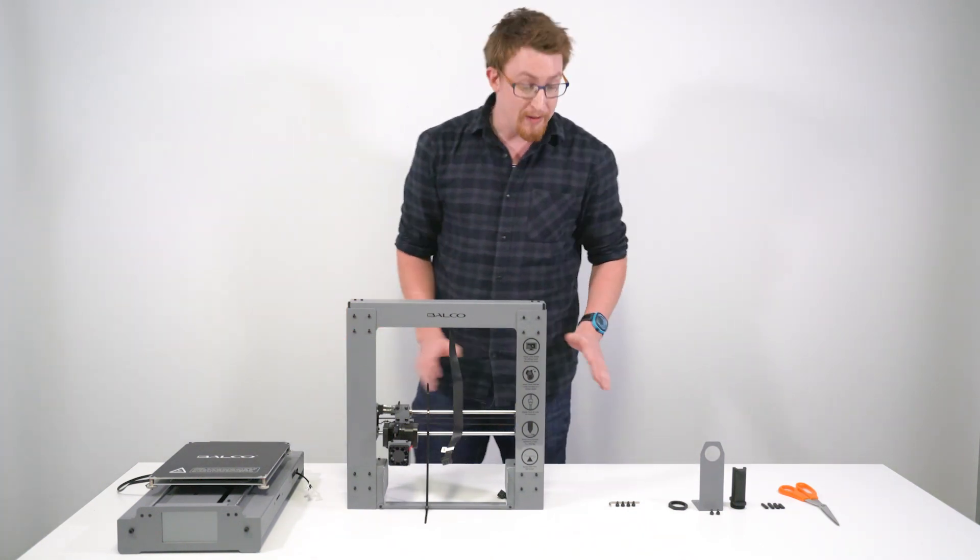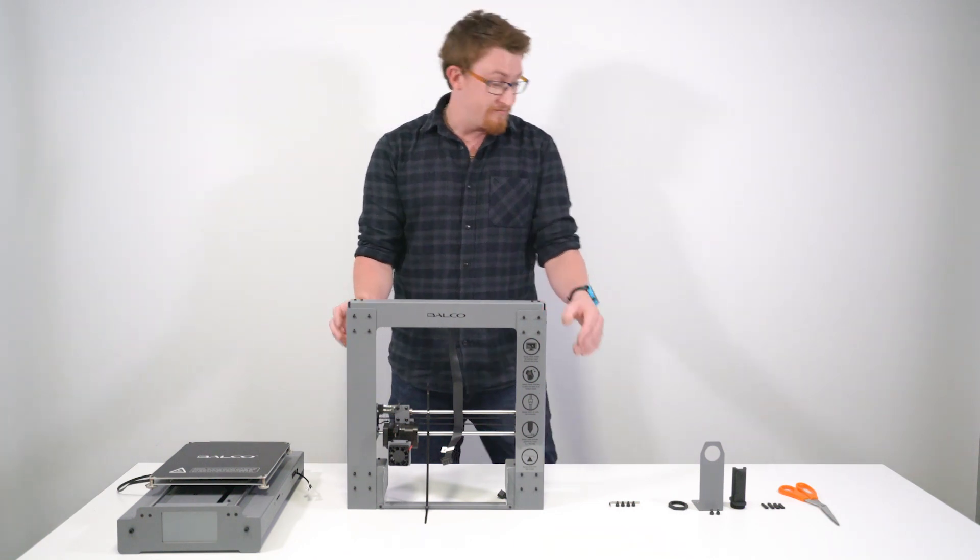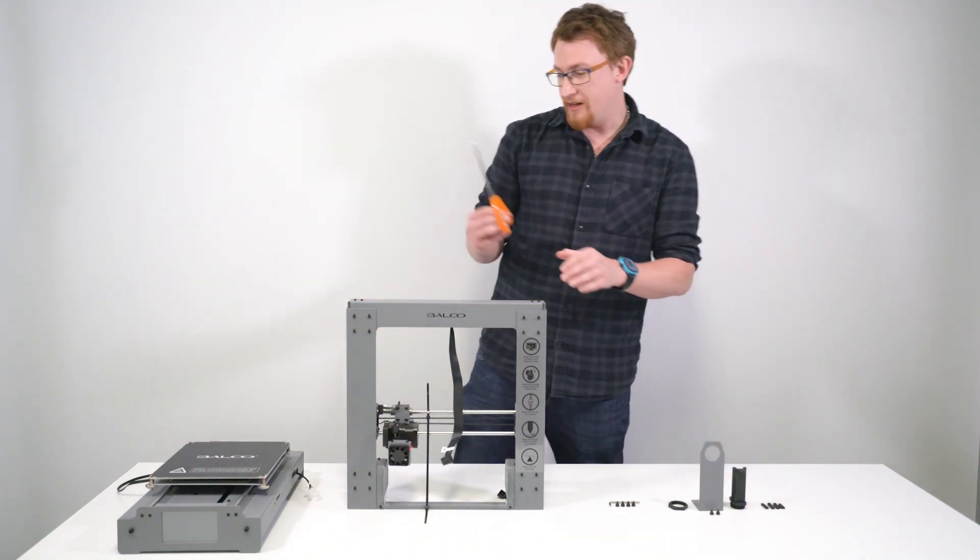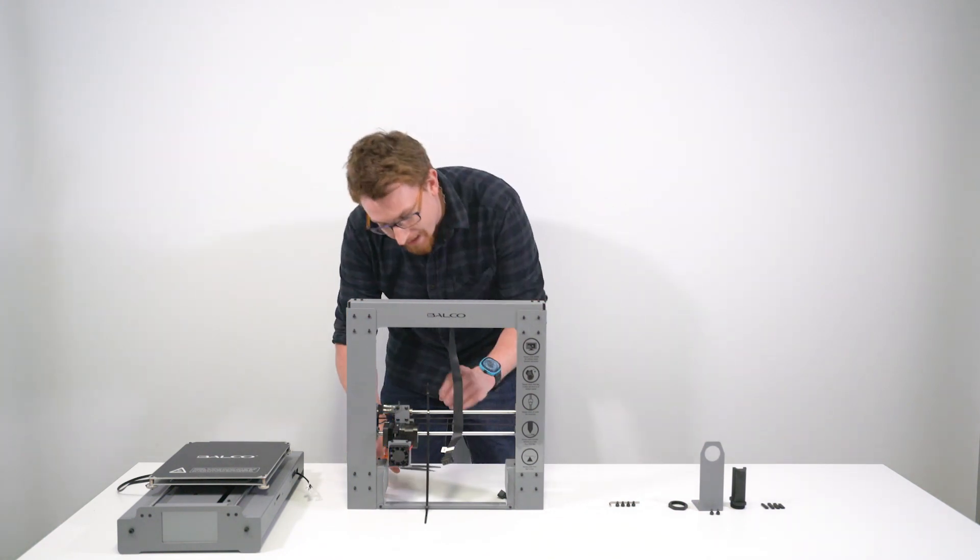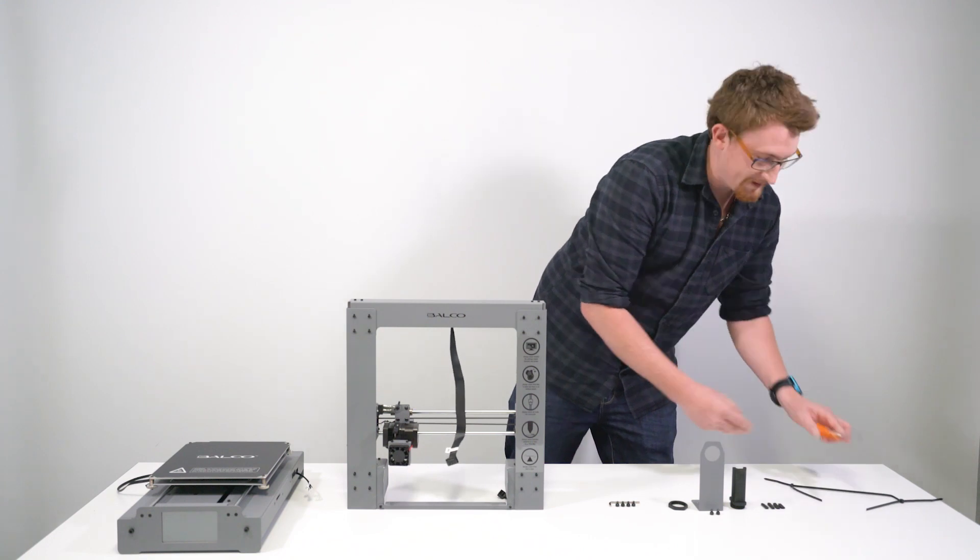First what you're going to want to do is make sure you've got plenty of bench space to lay everything out. And that's pretty much it. We're going to get some scissors here and we're going to cut the cable tie like so. Just put that to the side.